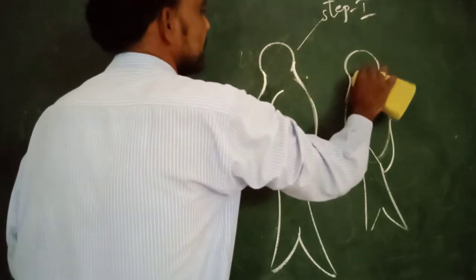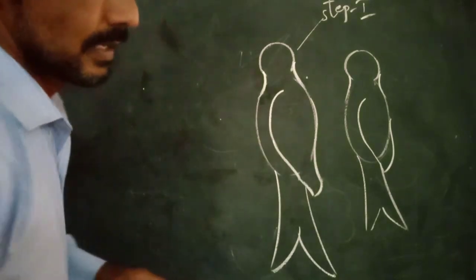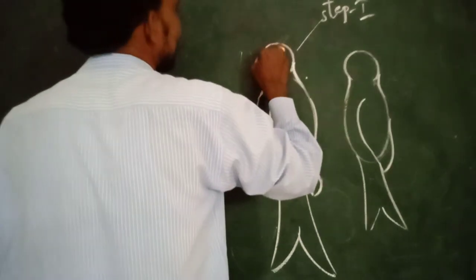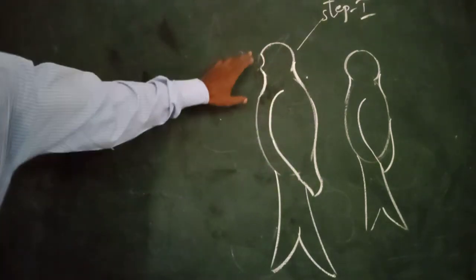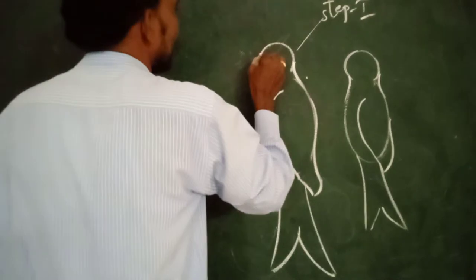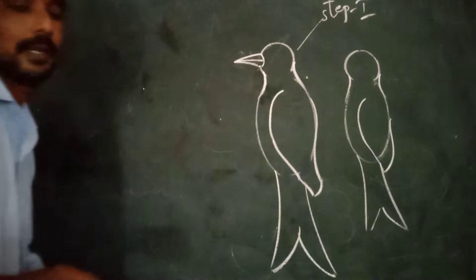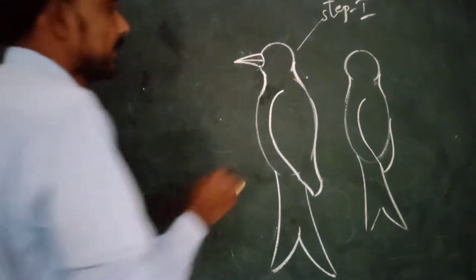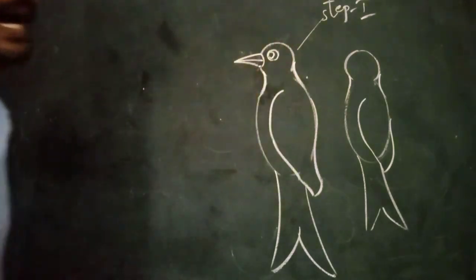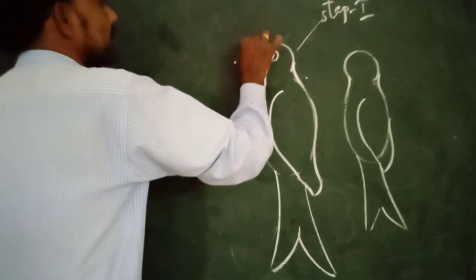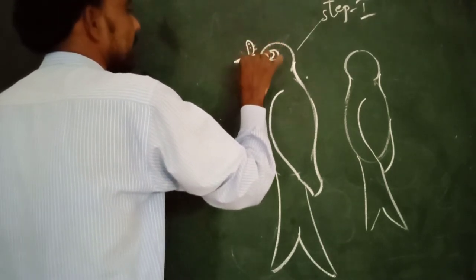I am erasing this part. Next I am going to add a beak to the bird. See, the beak — I am drawing it like a cone shape, it is looking like a cone shape. And this is the left eye of the bird.